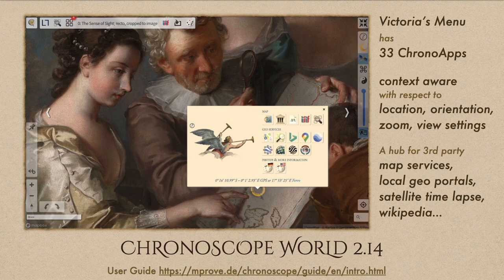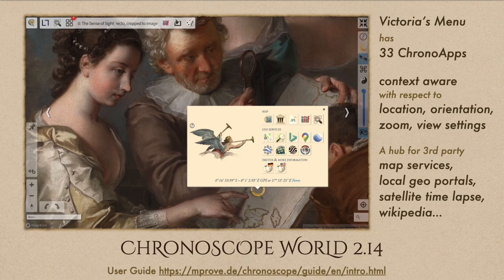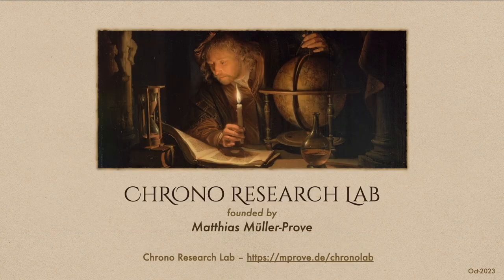Finally, the Chronocursor is a unique feature inside Chronoscope World. It offers access to other geo services like other map services and information databases, as well as Wikipedia in a context-aware fashion — so wherever you open the context menu, you get a specific set of applications relevant just for that spot on the map. Thank you for attending this webinar. Happy time traveling. Bye-bye.